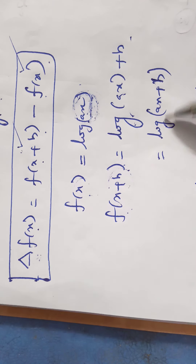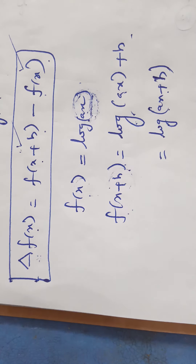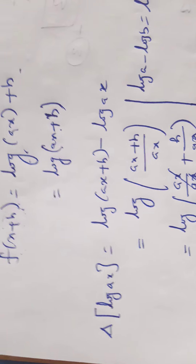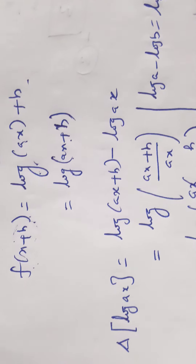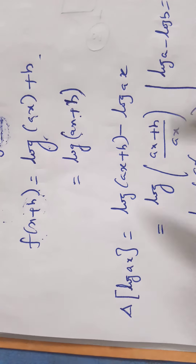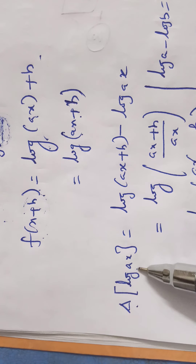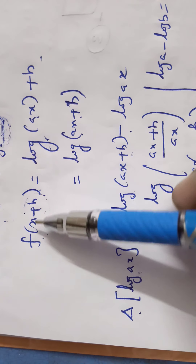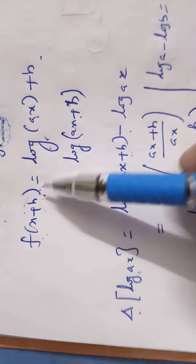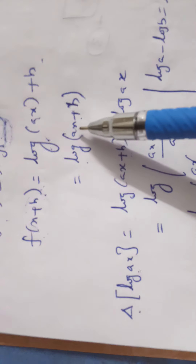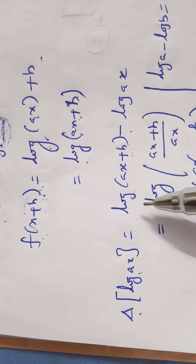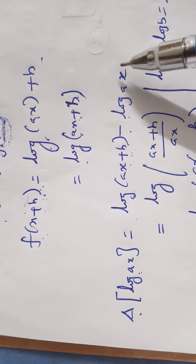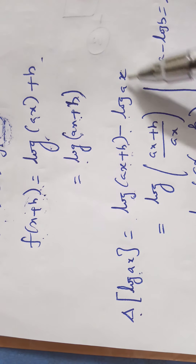f(x + h) = log(ax + h). Now applying the forward difference operator formula: Δf(x) = Δ(log ax) = f(x + h) − f(x) = log(ax + h) − log(ax).